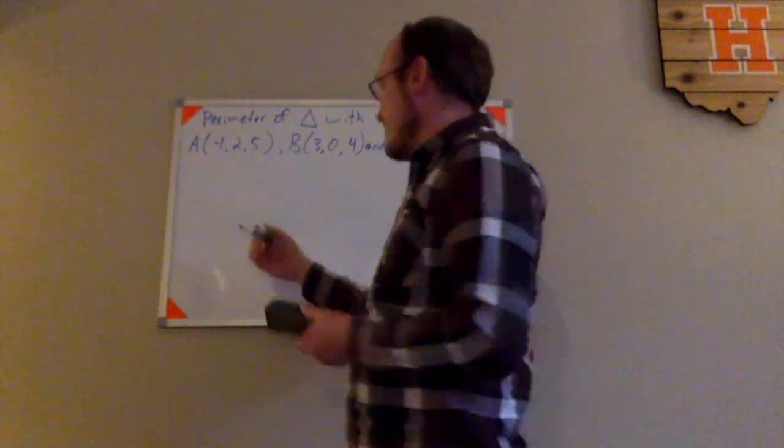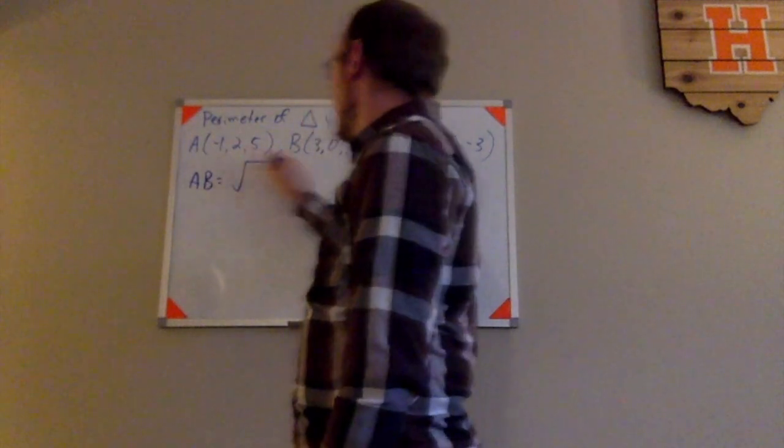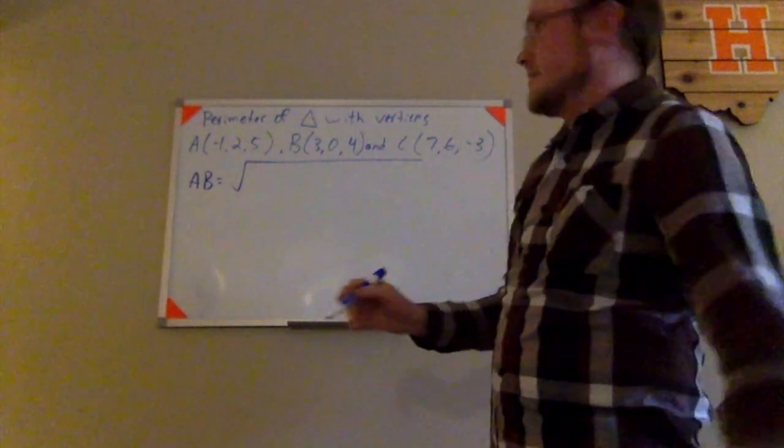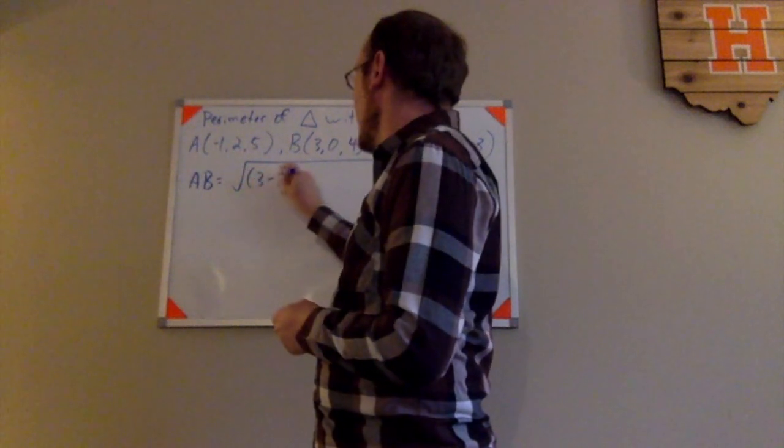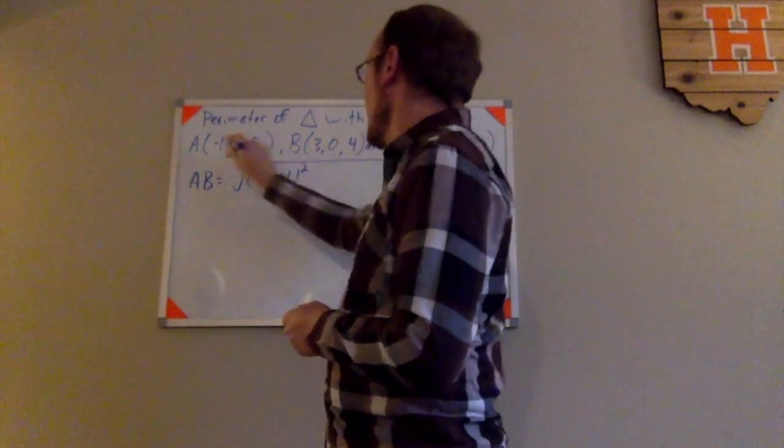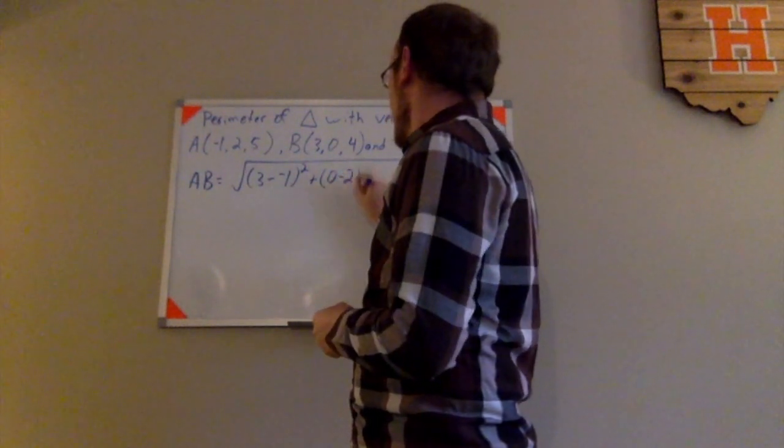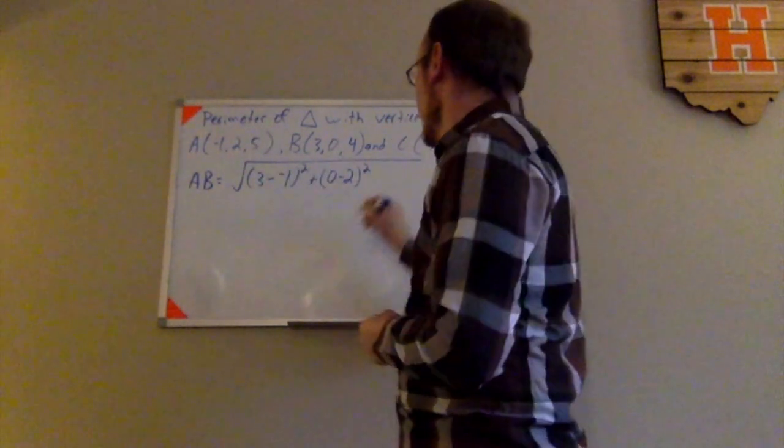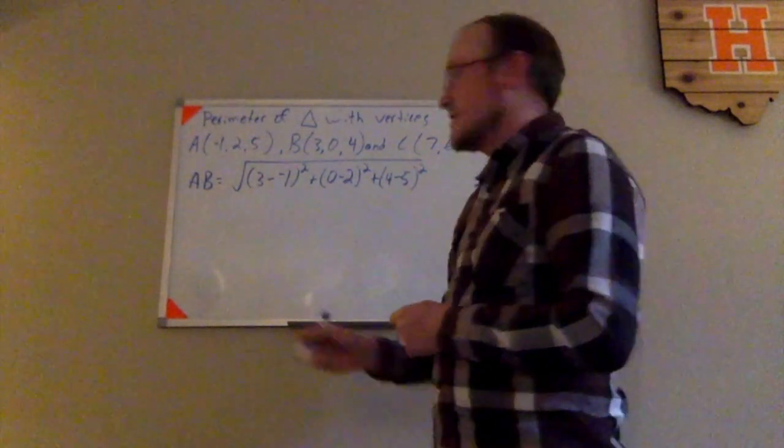We'll find the length of side AB. That's going to be equal to the square root of (3 - (-1))² plus (0 - 2)² plus (4 - 5)². There's my X's, those are my Y's, those are my Z's.